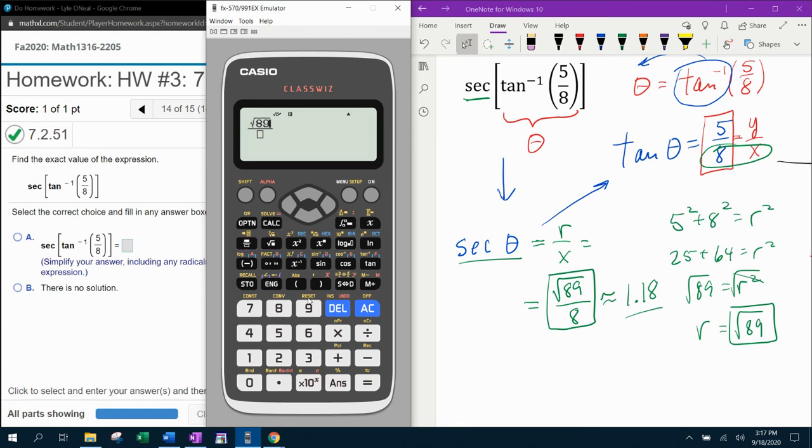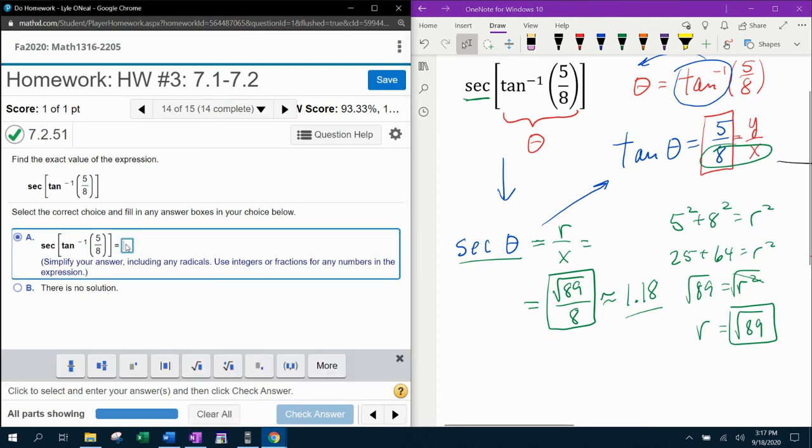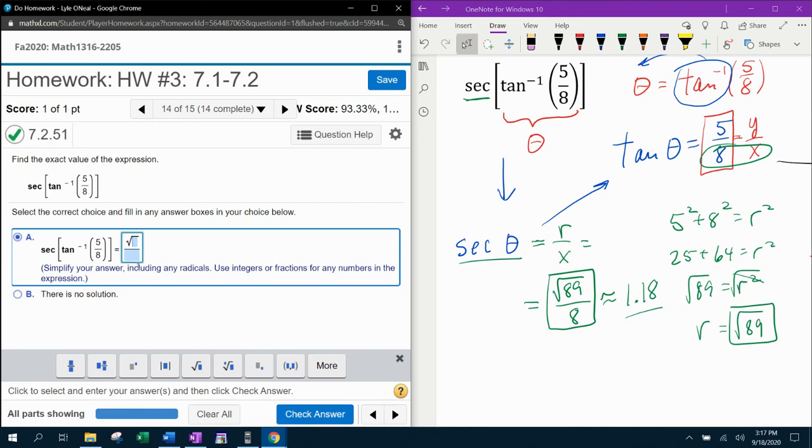So let's see if that's correct. Square root of 89 over 8 is approximately, look at that, the same thing. So even though the calculator did not give me the radical answer, I can still use the calculator to verify my handwritten work. It is possible.